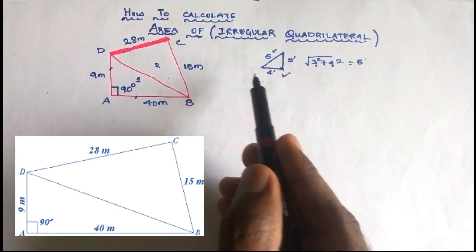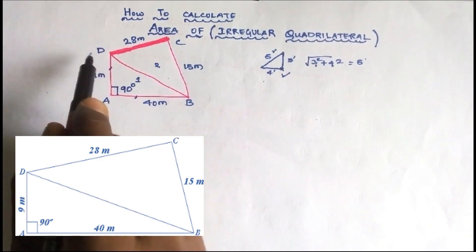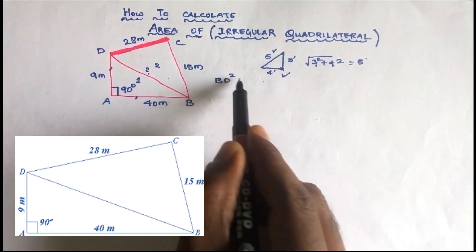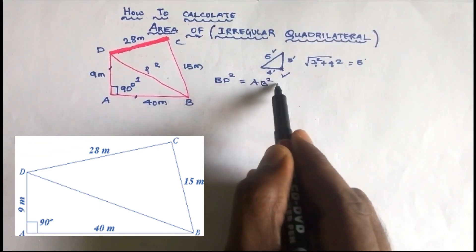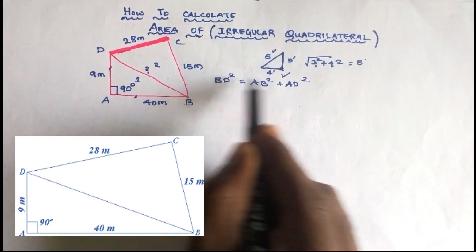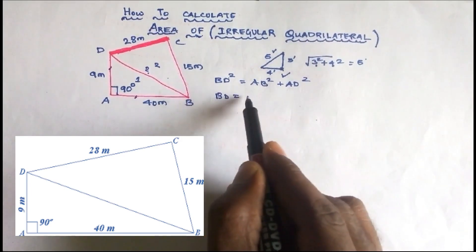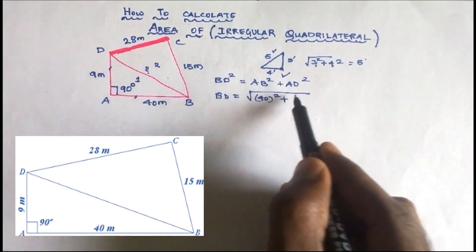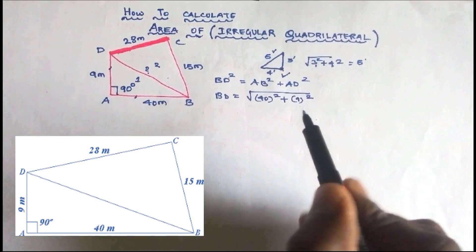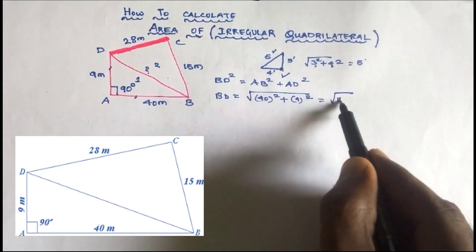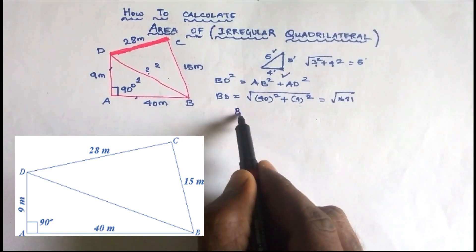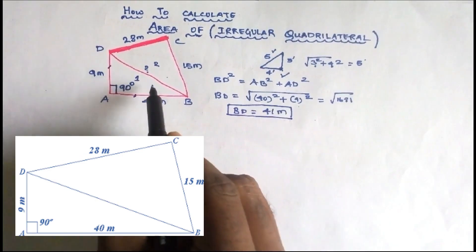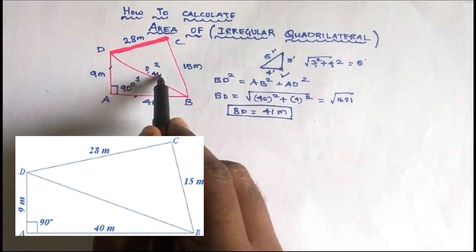That point totals 25, and the square root of 25 is equal to 5. So we use that method. Now we have BD. BD squared is equal to AB squared plus AD squared. So BD equals the square root of AB squared plus AD squared — that is 40 squared plus 9 squared, which gives 1681. So BD value is 41 meters.